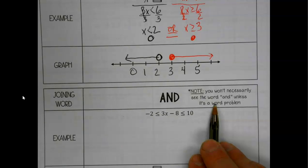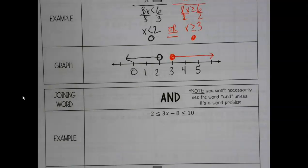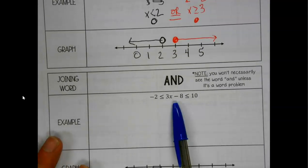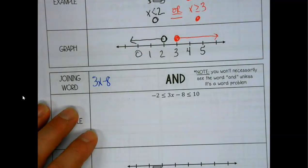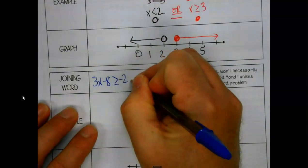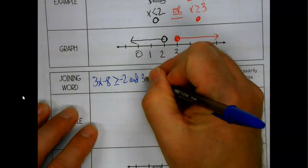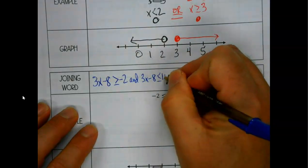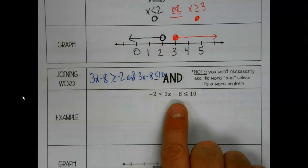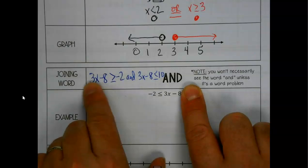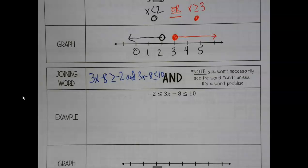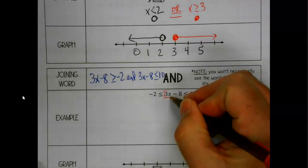You might not necessarily see the word 'and' unless it's a word problem. Notice the arrow is eating the 3x — if you see an 'and,' you can still just solve them separately. But most of your 'and' problems are going to be these three-part inequalities, and we're going to solve them the same way. The goal is to get x alone in the middle.